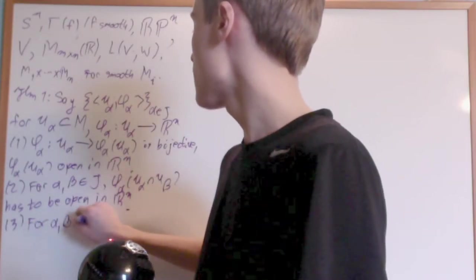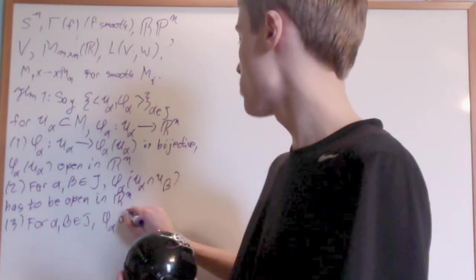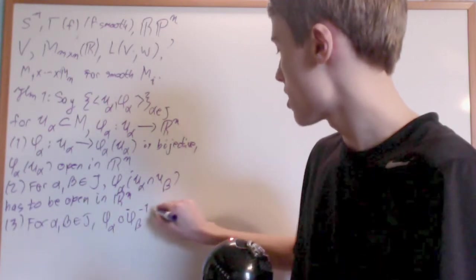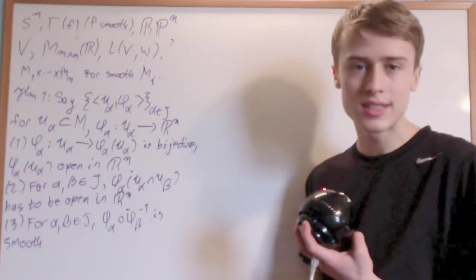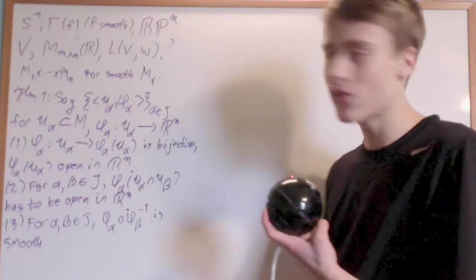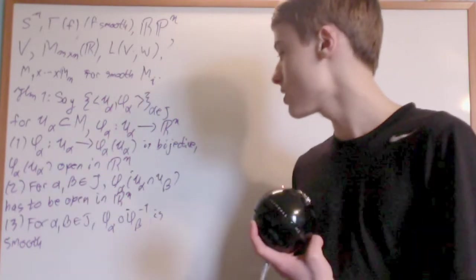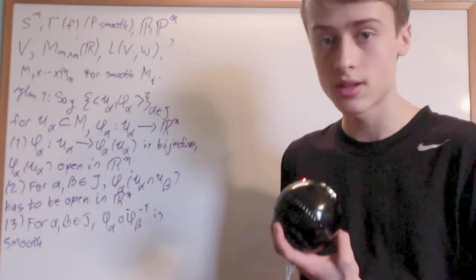Three. For alpha and beta, an element of J, phi_alpha composed phi_beta inverse is smooth. Because remember here, phi_alpha composed phi_beta inverse is the chart transition map, and as we've looked at that, that's from R^N to R^N. We're just making sure that this is a smooth manifold, that these are smooth charts.